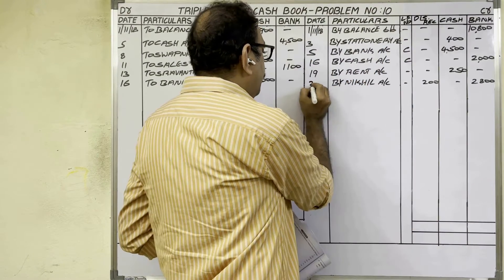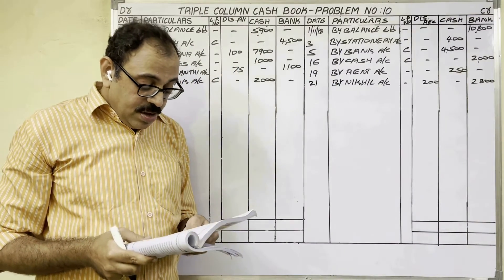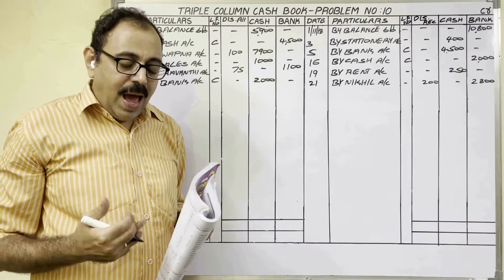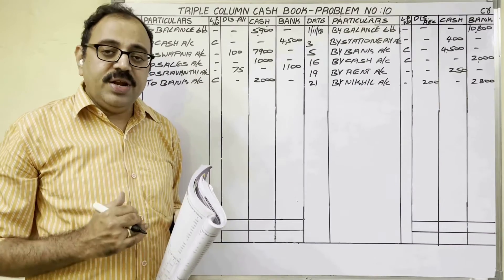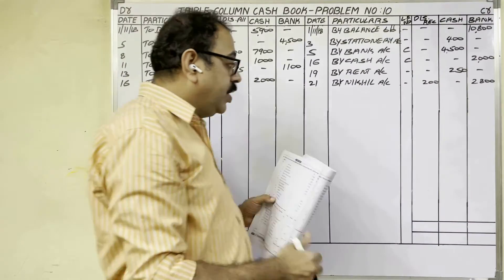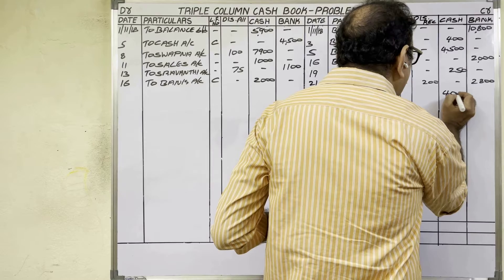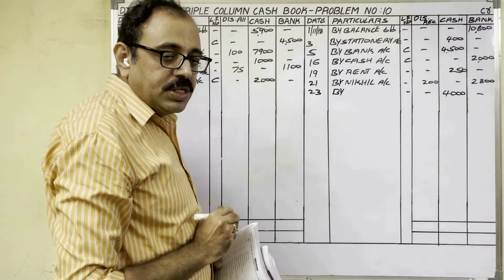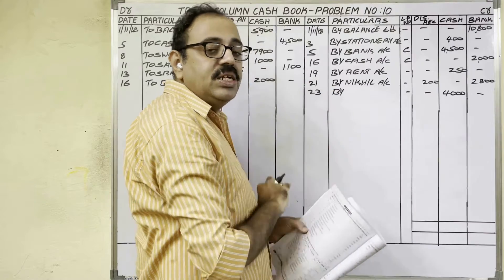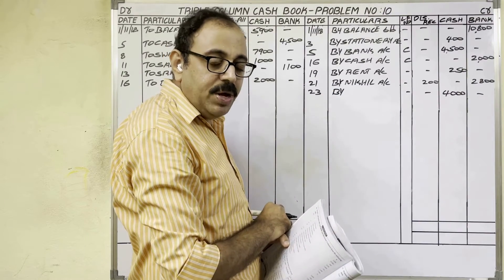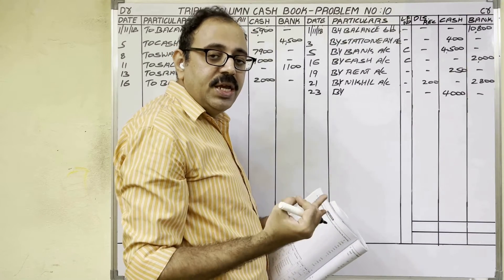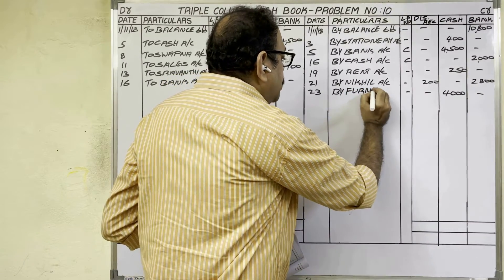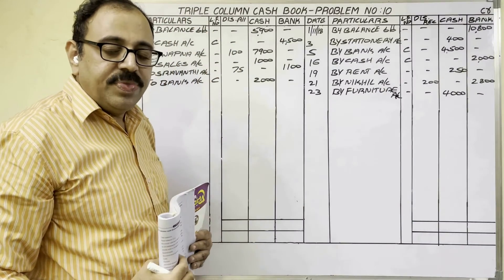Twenty-third date: purchased furniture 4,000 rupees. The firm purchased furniture — furniture is coming — and since no supplier's name is given, it is a cash purchase. Cash is going from the firm, so credit side cash column: 4,000 rupees. If fixed assets are purchased, we write the asset name, not 'purchases account.' Here the fixed asset is furniture, so write 'by furniture account.' All postings are now completed.